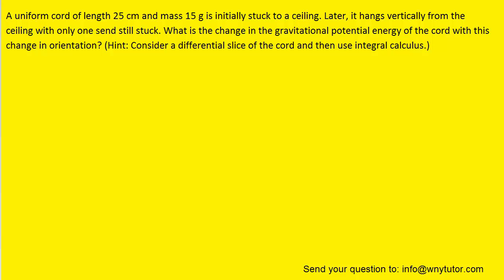If you haven't done so yet, please pause the video and try the question yourself before moving on. So we have a cord that's initially stuck to the ceiling and then one end is loosened and it's hanging vertically from the ceiling in this orientation, and we are asked to find the change in the gravitational potential energy.